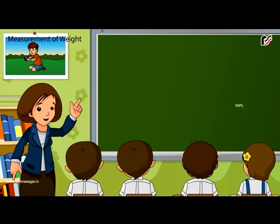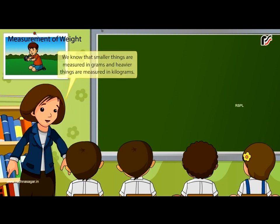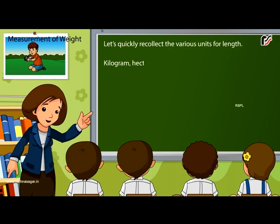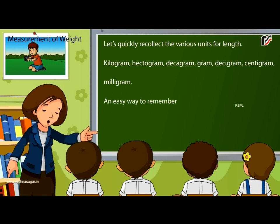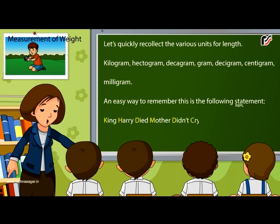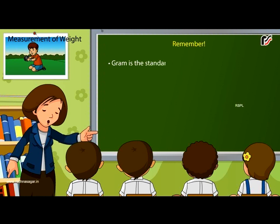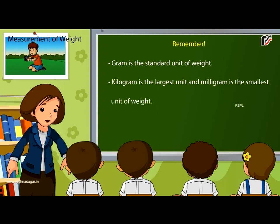Measurement of Weight. We know that smaller things are measured in grams and heavier things are measured in kilograms. Let's quickly recollect the various units for weight: kilogram, hectogram, decagram, gram, decigram, centigram, milligram. An easy way to remember this is: 'King Harry died, mother didn't cry much.' Remember, gram is the standard unit of weight. Kilogram is the largest unit and milligram is the smallest unit of weight. Between two units there is a jump of ten.